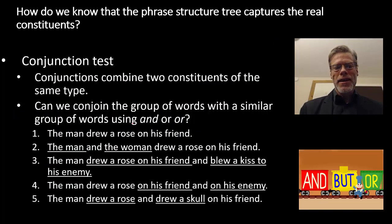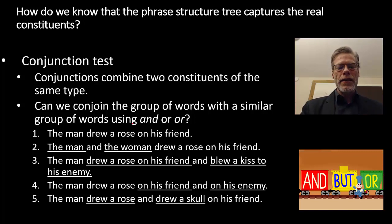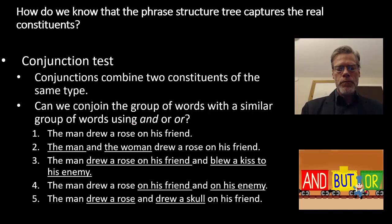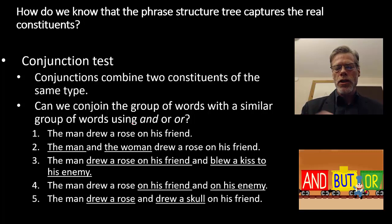Then we have the conjunction test. Conjunctions combine constituents of the same category together. So we can get 'the man and the woman drew a rose on his friend' — combining two noun phrases. Or 'the man drew a rose on his friend and blew a kiss to his enemy' — combining two verb phrases. We can also combine two preposition phrases: 'the man drew a rose on his friend and on his enemy.' And 'the man drew a rose and drew a skull on his friend' is good evidence that drew a rose is a verb phrase — a constituent with on his friend acting as a modifier.